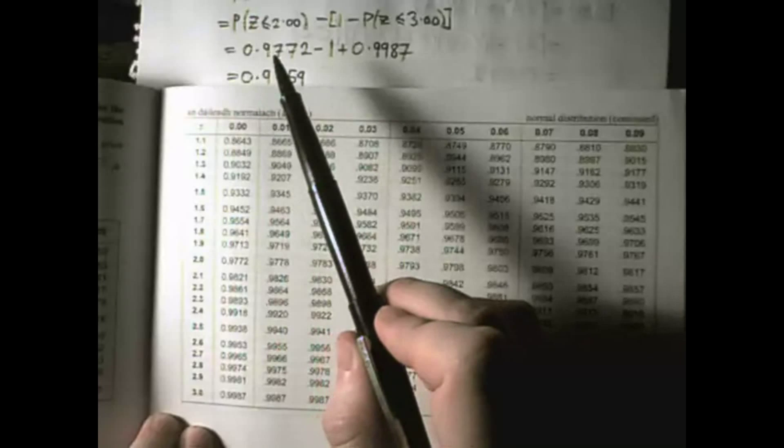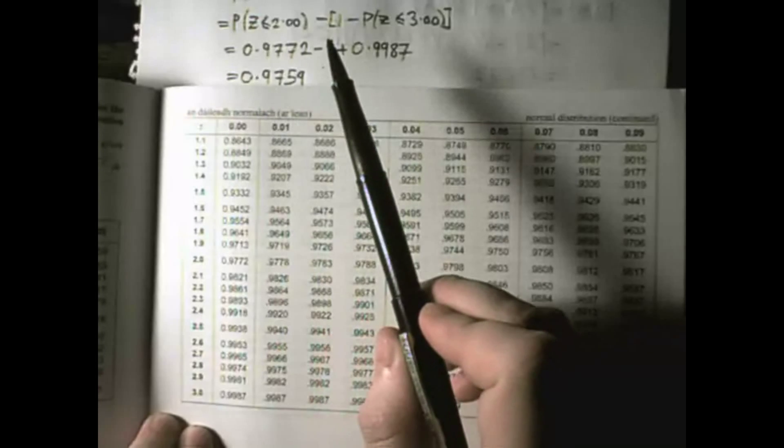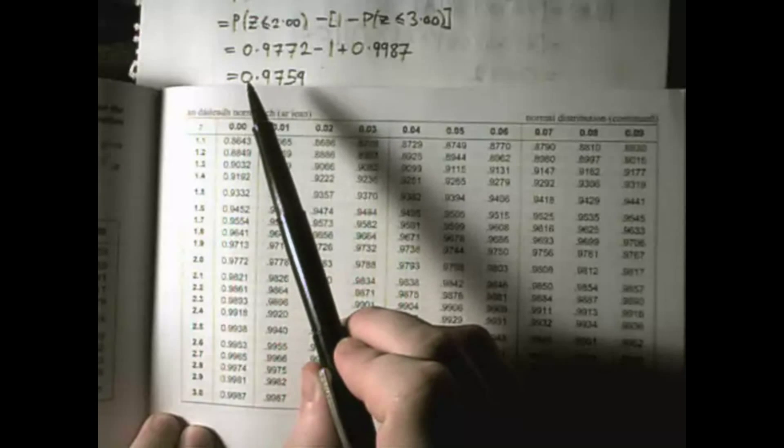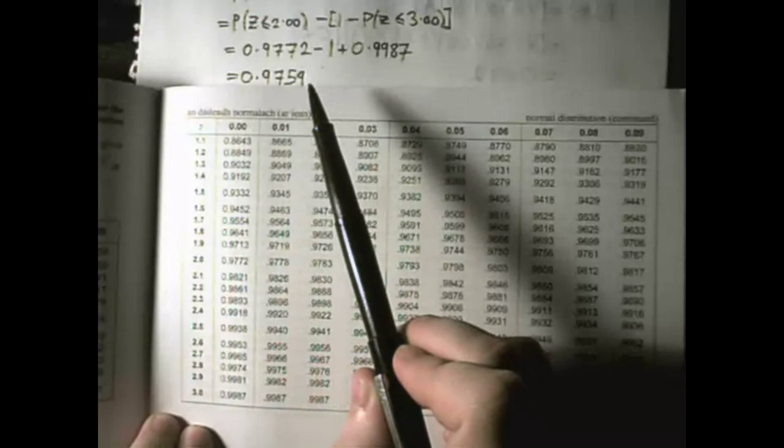So that's what I have here, 0.9772 minus 1 plus 0.9987. Add those together and you'll get 0.9759.